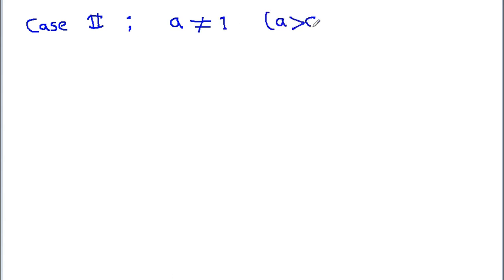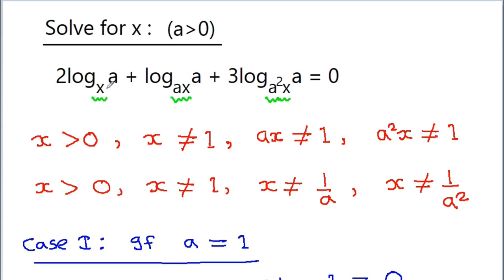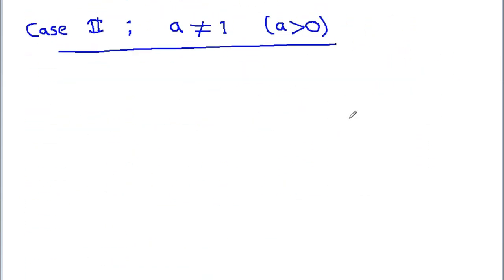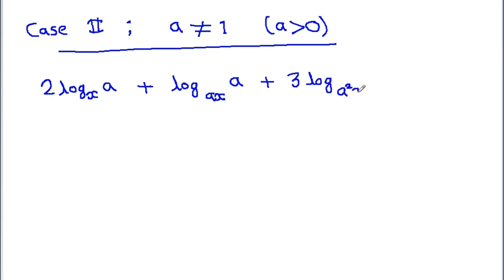Case 2: when a ≠ 1 (with a > 0), we have 2·log base x of a, plus log base ax of a, plus 3·log base a²x of a, is equal to 0. The three terms have different bases: x, ax, and a²x respectively, but all have argument a.